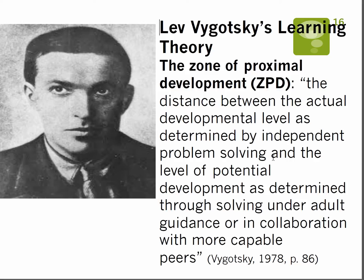Vygotsky was a prodigy-like person who wrote 186 different works during his lifetime. He died when he was 37, while Piaget lived into his mid-to-late eighties. Vygotsky was a special education teacher and a professor who theorized learning. The most important learning theory we should remember from him is the zone of proximal development.